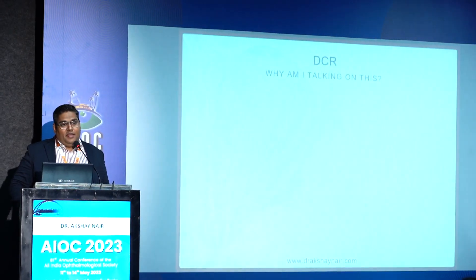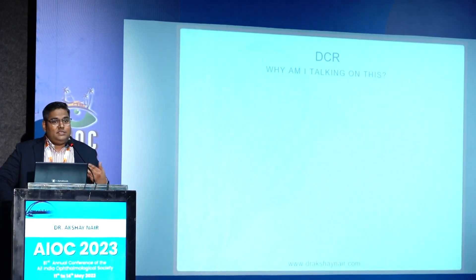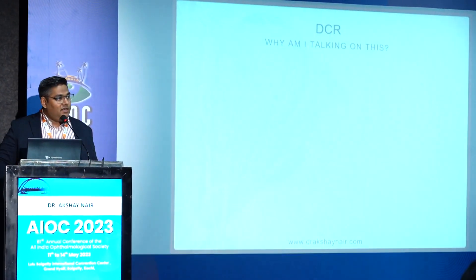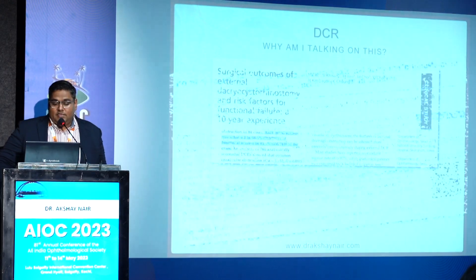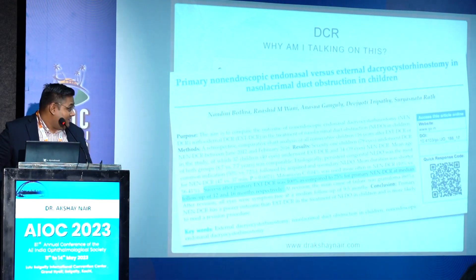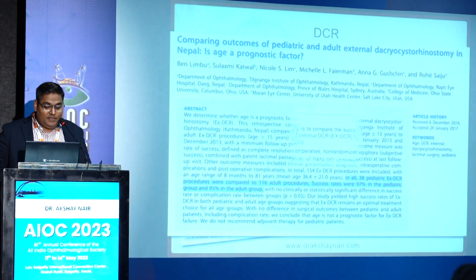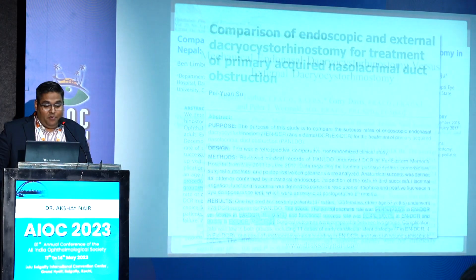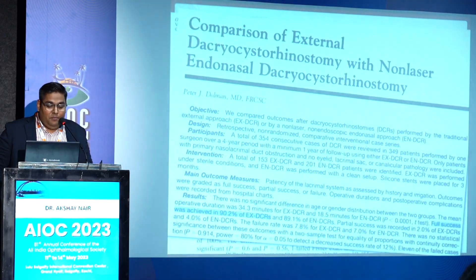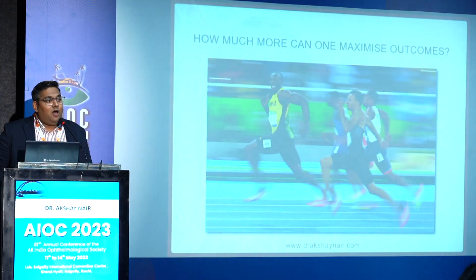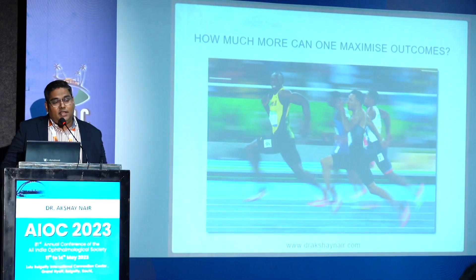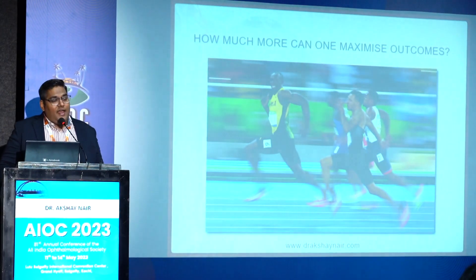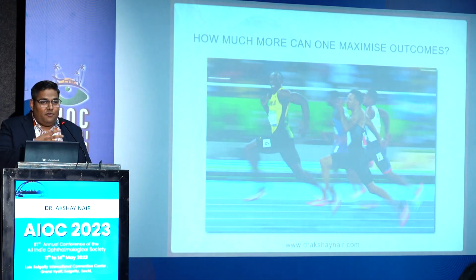As oculoplastic surgeons we all try to explain to each other how to do DCR surgery because it is primarily our bread and butter. Papers report 98%, 100%, 97% in pediatric external DCR, and complex DCR at 98.5%; comparing external and endoscopic, both achieve 90% plus. How much more can we maximize outcomes? Surgery that works well in each of our hands is what we are comfortable doing, and we rarely change what we already do comfortably.